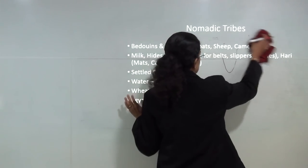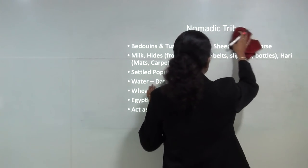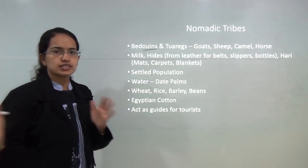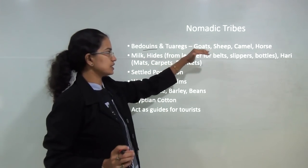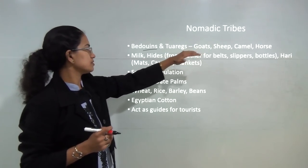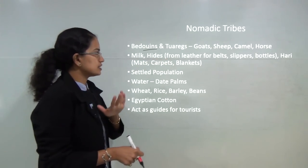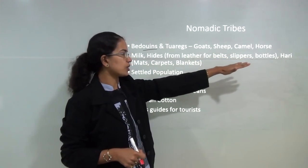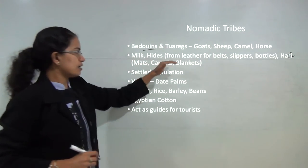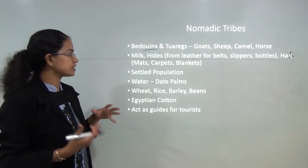Regarding the tribes in this region, there are two basic tribes known as Bedouins and Tuaregs. These tribes have a nomadic lifestyle, meaning they move from one region to another. Their common pet animals are goat, sheep, camel and horse. From these animals they use mainly the milk and the hides. From the hides — that is, the leather — they make belts, slippers and bottles. From the hair they make mats, carpets and blankets. Nomadic tribes have now started to lead a more settled lifestyle.